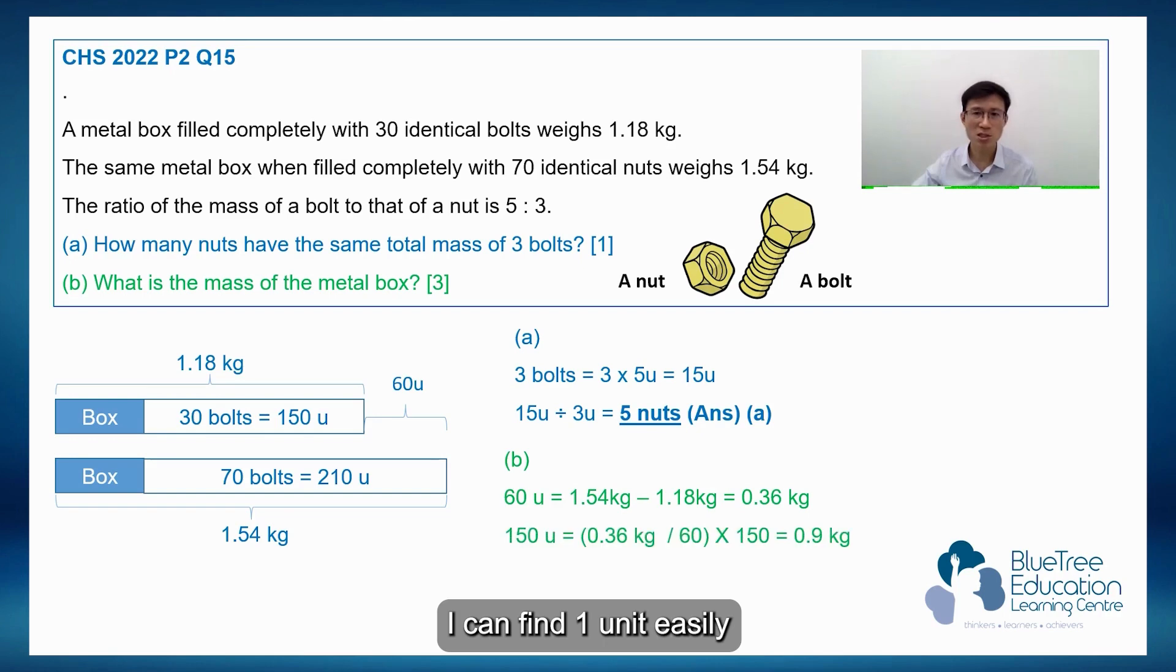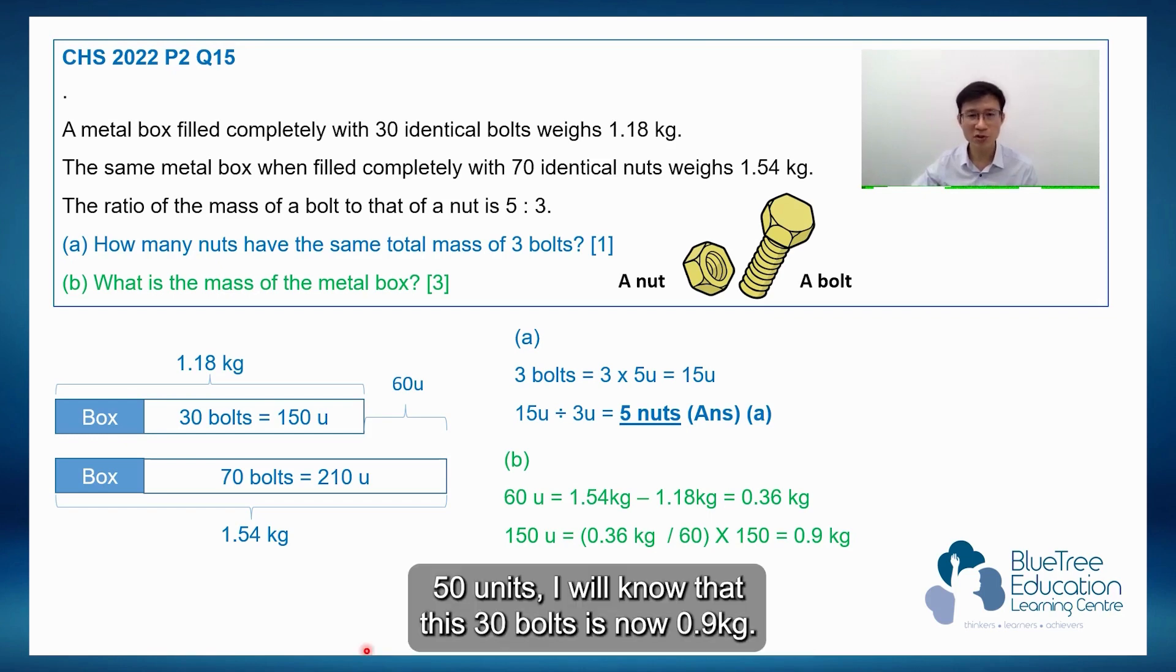I can find one unit easily. And then I can find 150 units, which is 0.36 divided by 60 times 150. Now, why do I want to look for 150 units? If I look for 150 units, I will know that this 30 bolts is now 0.9 kg.